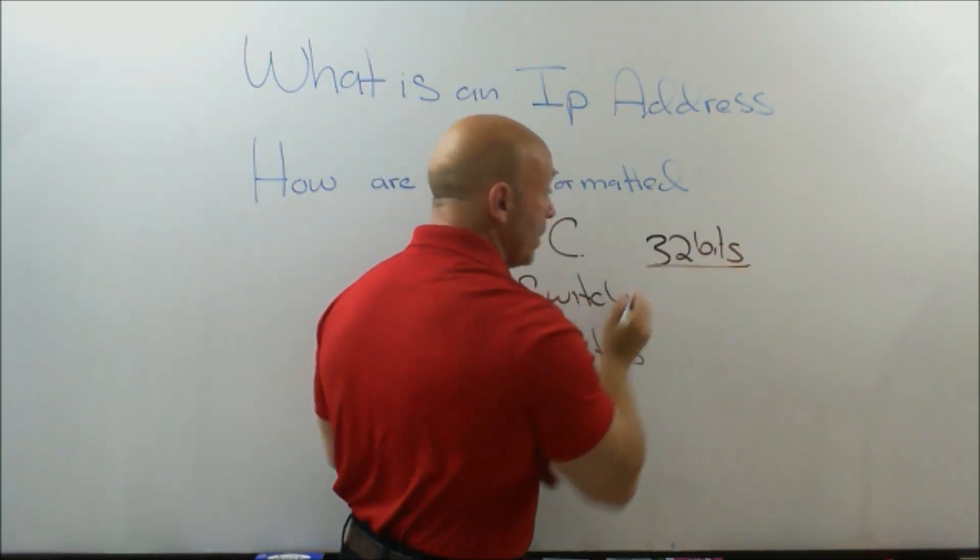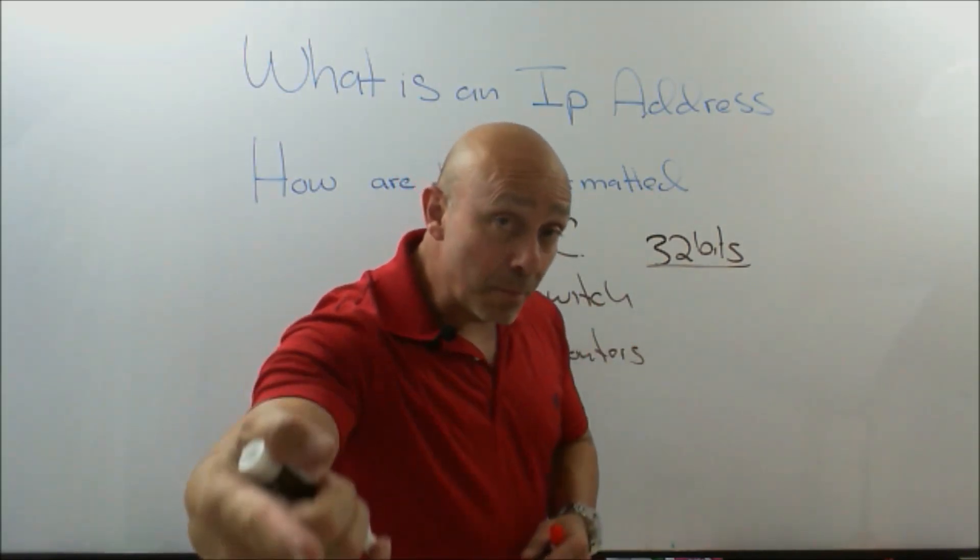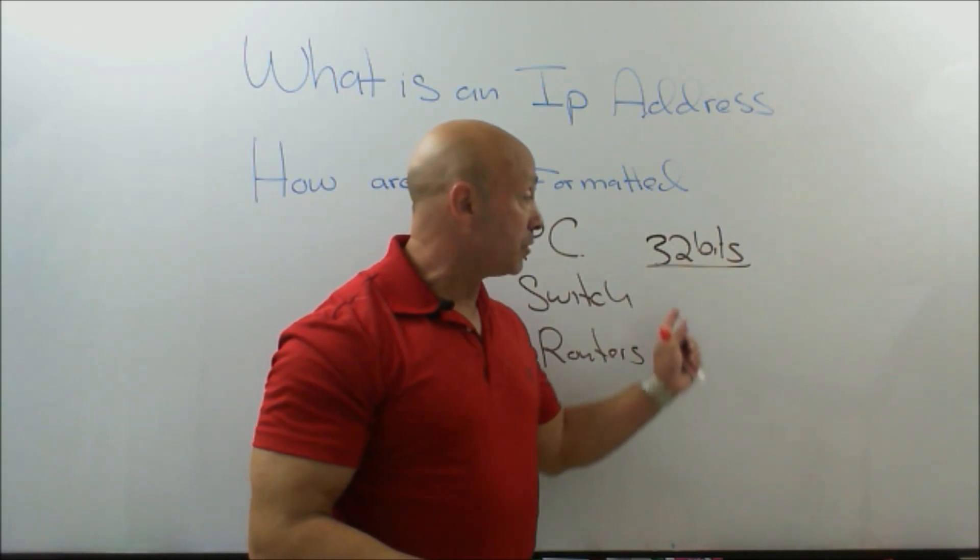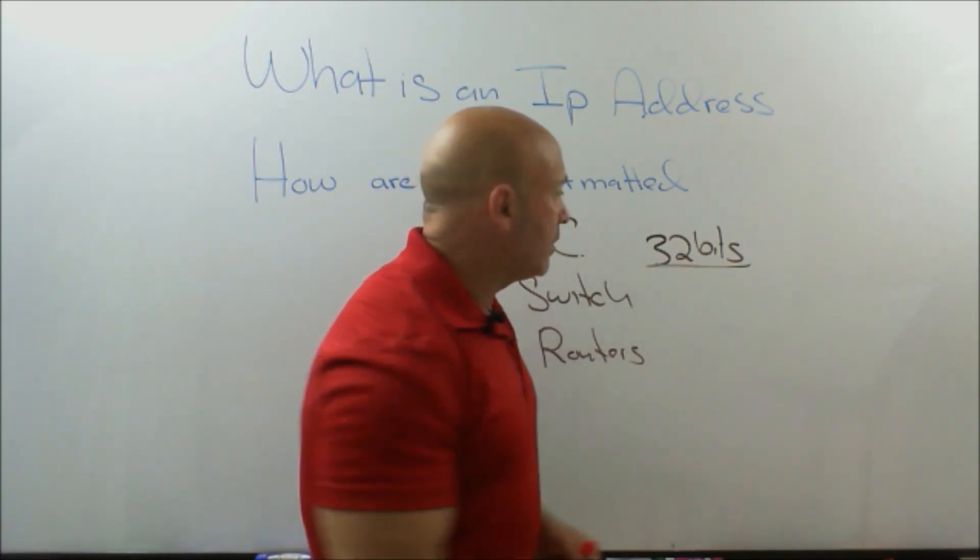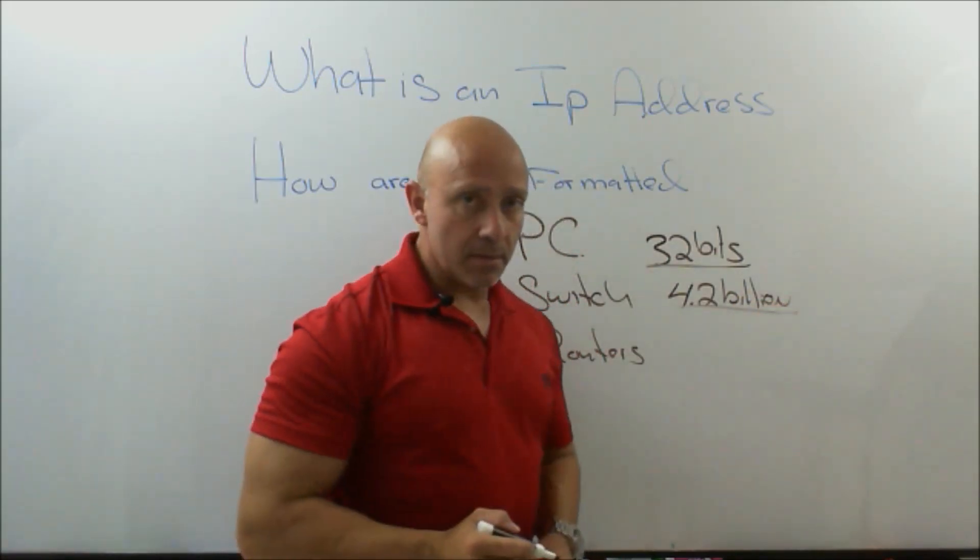32 bits, because you have four octets. Each octet is eight bits long. Four times eight is 32. So it's a 32-bit address, which gives you roughly 4.2 billion addresses.